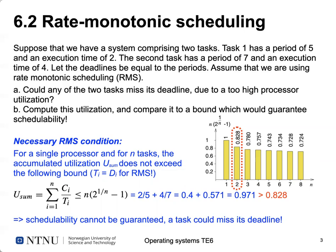The first question was: could either task miss its deadline due to too high processor utilization? Yes — that's a general problem in Rate Monotonic Scheduling. If processor utilization is too high, you can miss a deadline. The question is really what is the utilization and whether we're on the safe side.